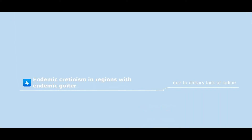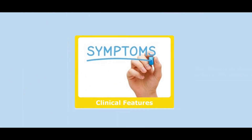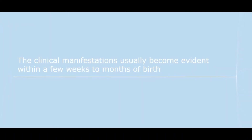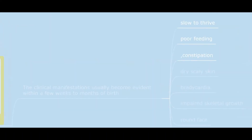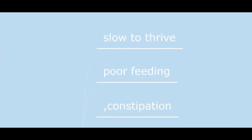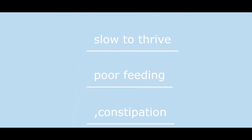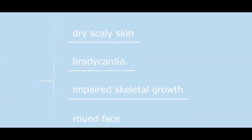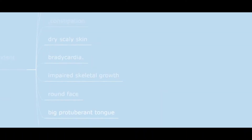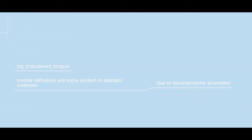Endemic cretinism occurs in regions with endemic goiter due to dietary lack of iodine. Clinical features usually become evident within a few weeks to months of birth: slow to thrive, poor feeding, constipation, dry scaly skin, bradycardia, impaired skeletal growth, coarse face, big protuberant tongue. Mental deficiency is more evident in sporadic cretinism due to developmental anomalies.